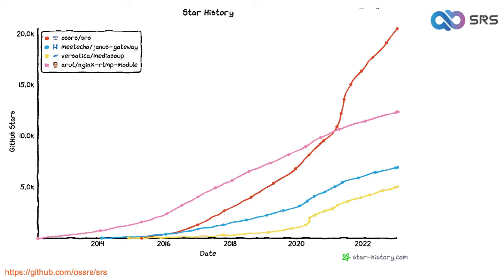SRS acts as a media gateway converting between RTMP, SRT, and WebRTC, so you don't need three separate servers. We've also updated our documentation and website, which you can check out at osrs.io.